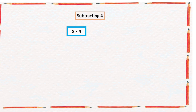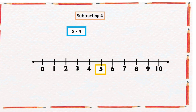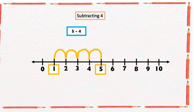Our last example says five minus four. In our number line we're going to start from number five and count four numbers backward: one, two, three, four. The arrow ended at one, so five minus four is one.